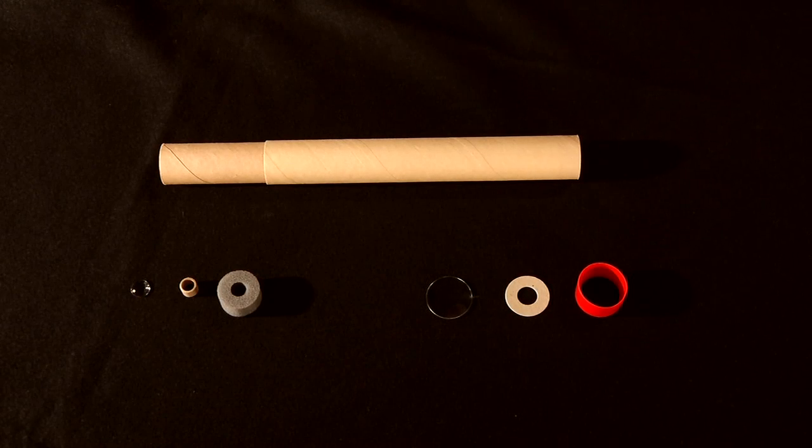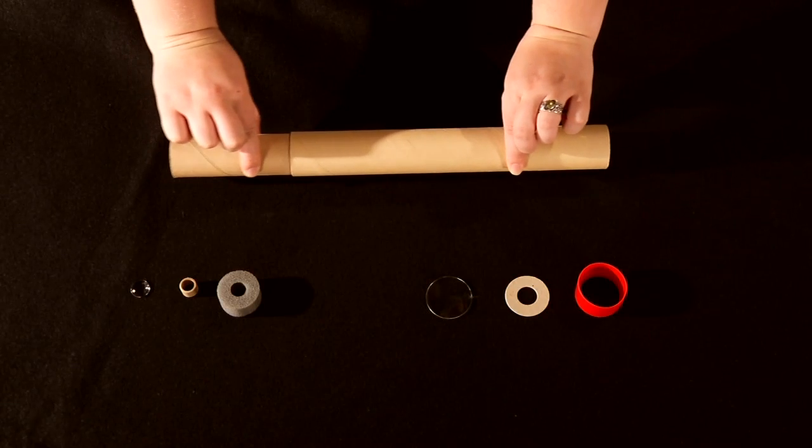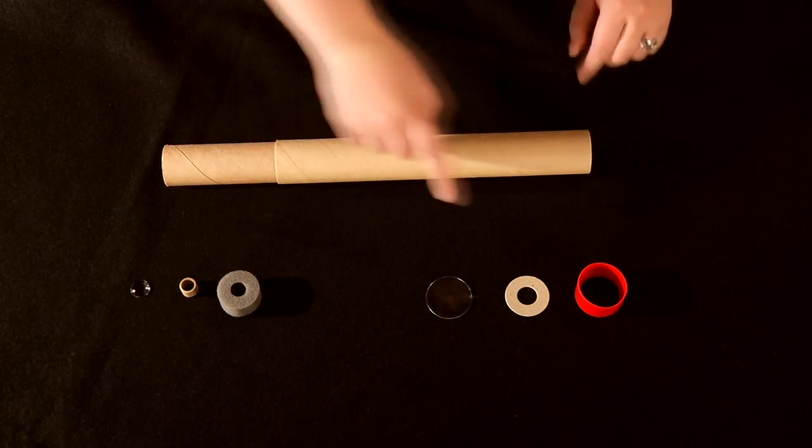I am going to walk you through how to build a simple cardboard telescope. The body of the telescope is made from two cardboard tubes that nest together.